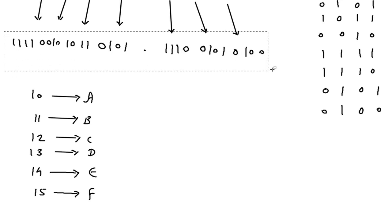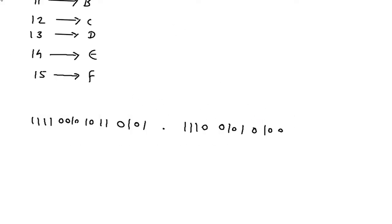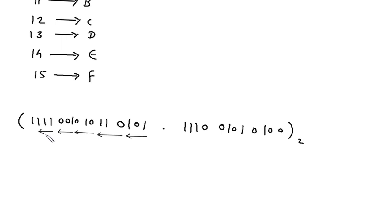Now we will take this binary number. We will make a grouping of 3 because we want to convert this binary into its equivalent octal number. From this binary point, we make groups of 3 going left, and groups of 3 going right. Here only 1 bit remains on the left end, so we add two more zeros to make a group of 3. The weights are 4, 2, 1.